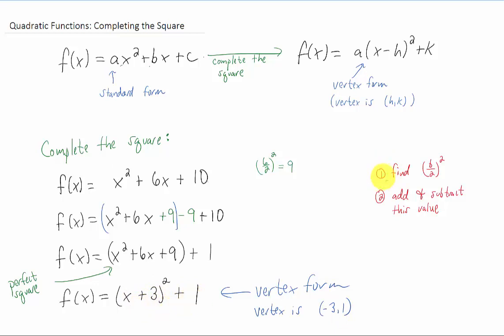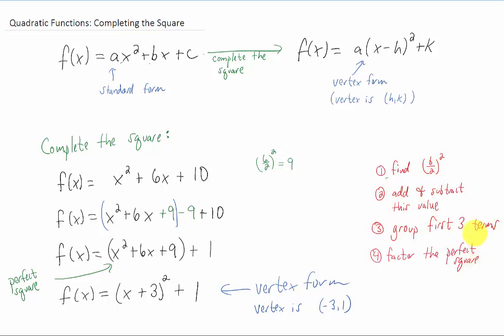The steps to completing the square are finding b over 2 squared, adding and subtracting this value. We group the first three terms together because those first three terms become a perfect square. We factor that perfect square, and our function should then be in vertex form.